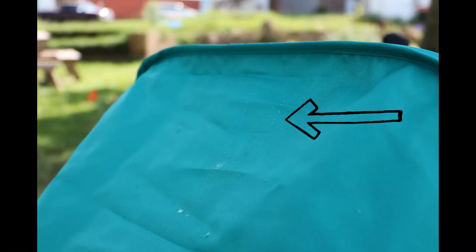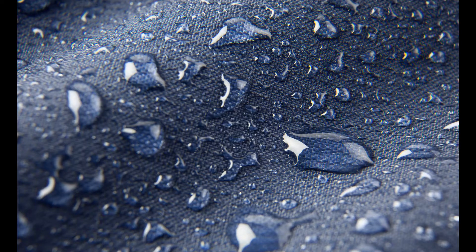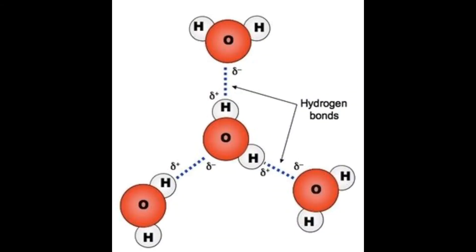Another real example of Van der Waal forces is a canopy with water. The water clumps together on the canopy and then falls off. This is an example of attractive Van der Waal forces, because the water holds itself together against the surface until the forces break apart. The water is attracted to the canopy, but the forces are weak.